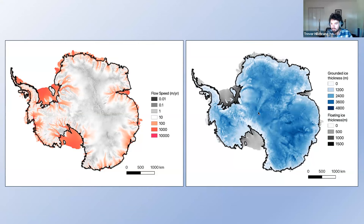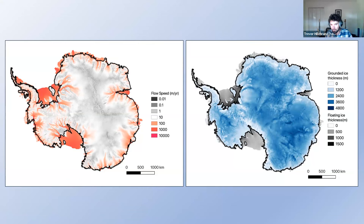On the right, I have the ice thickness. Grounded ice thickness is in blue, up to five kilometers thick towards the interior of the ice sheet. These floating regions we call ice shelves are in gray, ranging up to about two kilometers or a kilometer and a half thick.